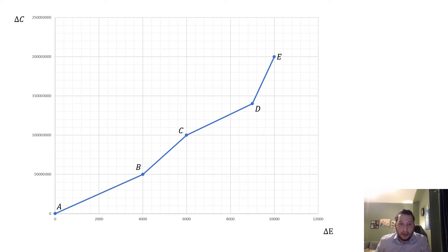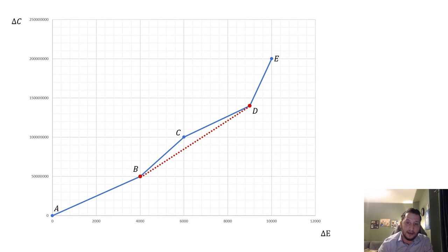If we plot each of these options on our plane here—options A to E—we get the following picture. Now we need to look at option C because that's going to be dominated by B and D. Why is that the case? Because we're able to draw a chord between B and D which lies below C.